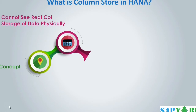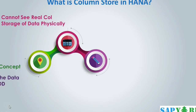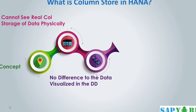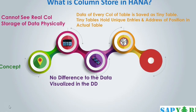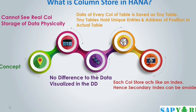That means there is no difference to the data visualized in the data dictionary in SE11, SE16, or SE16N. If a table is marked as column store, then each column of the table is saved as a tiny table which holds unique entries and addresses of the position of data for that field in the actual table. For example, if a table marked as column store has 10 fields, then at the database level, 10 tiny tables would be created for each field which holds unique entries and addresses. Since these tiny tables have unique entries, they act like index tables. Hence, the secondary index can be avoided for column store tables.